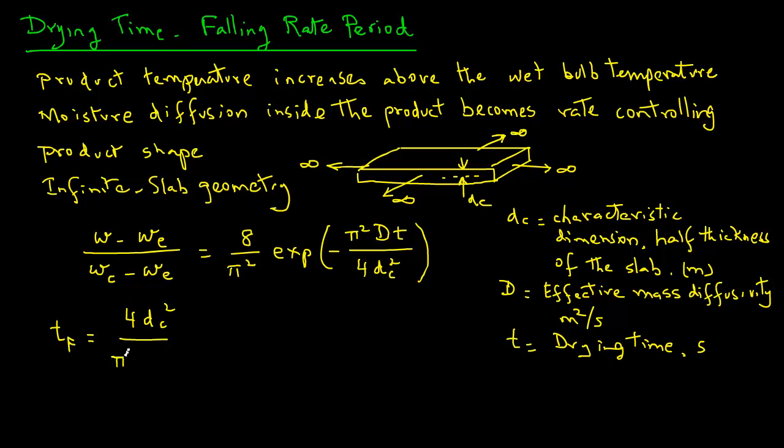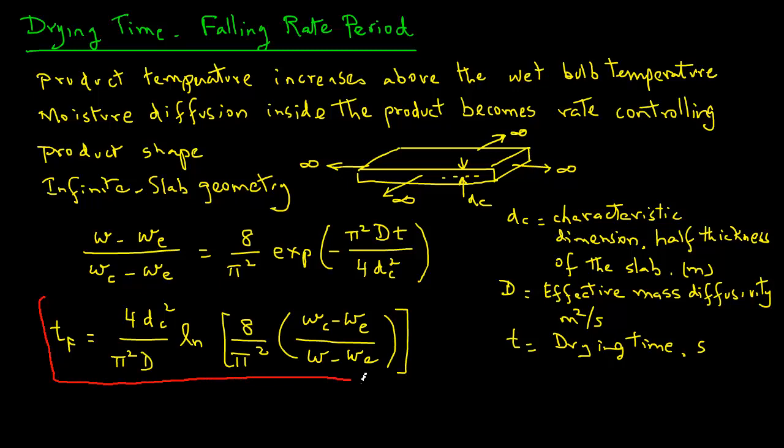So, time for the falling rate will be 4 DC square divided by pi square D, times natural log of 8 over pi square. Here, in parentheses, we have the moisture ratio, WC minus WE divided by W minus WE. So, this equation can be used to determine the time during the falling rate period. This is for a food of an infinite slab shape. Similar expressions can be written for other shapes, like infinite cylinder or a sphere.